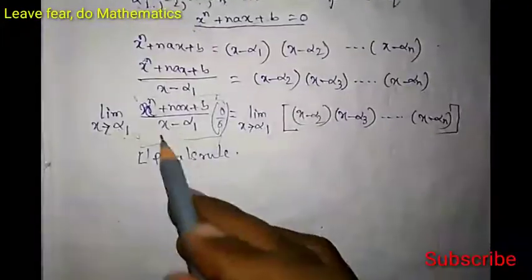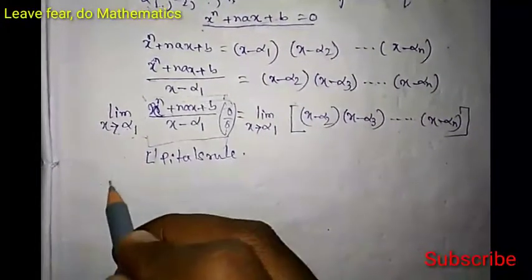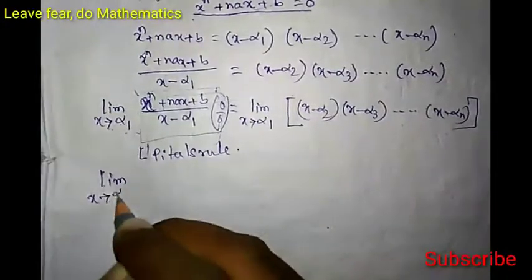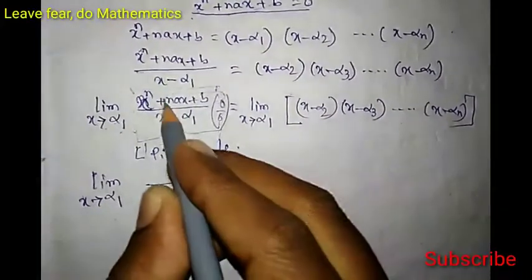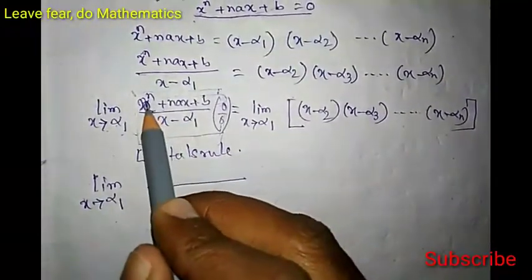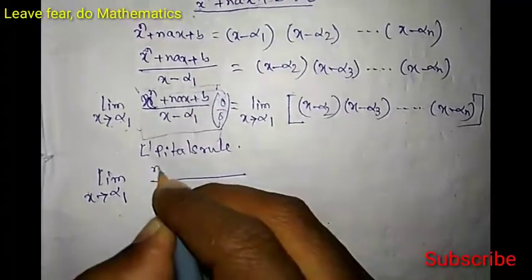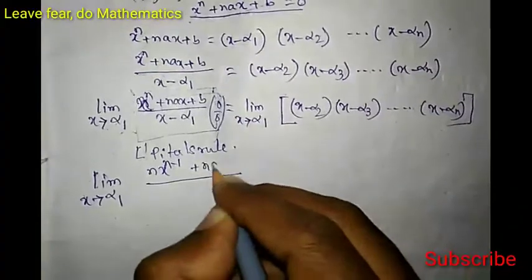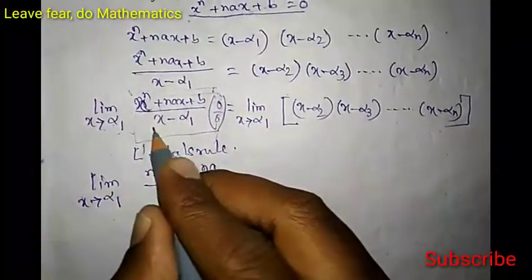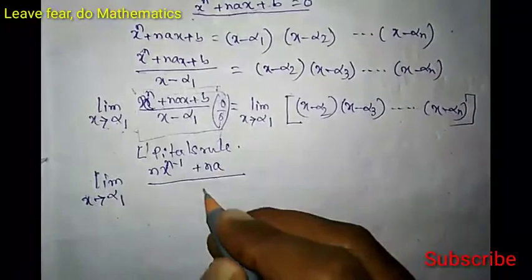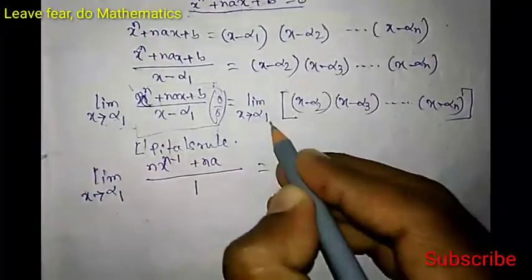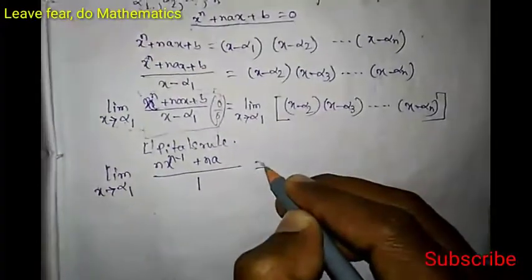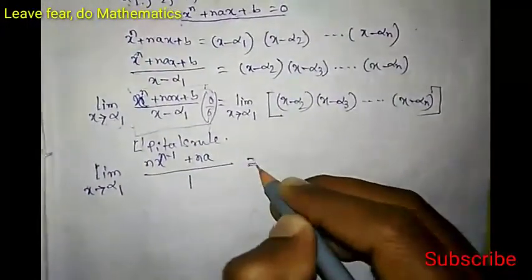Applying L'Hôpital's rule to the left-hand side, we take the derivative of the numerator and denominator with respect to x. The derivative of the numerator xⁿ + nax + b is nxⁿ⁻¹ + na, and the derivative of the denominator (x − α₁) is 1. So the left side becomes lim(x→α₁) [nxⁿ⁻¹ + na] / 1.